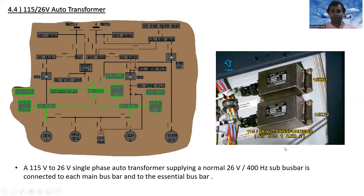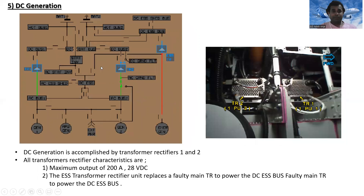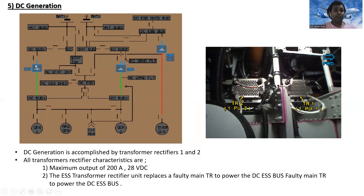For DC generation, DC power is accomplished by transformer rectifiers one and two. All transformer rectifier characteristics are a maximum output of 200 amperes at 28 volts DC. The essential transformer rectifier unit can replace a faulty main transformer rectifier to power the DC essential bus.